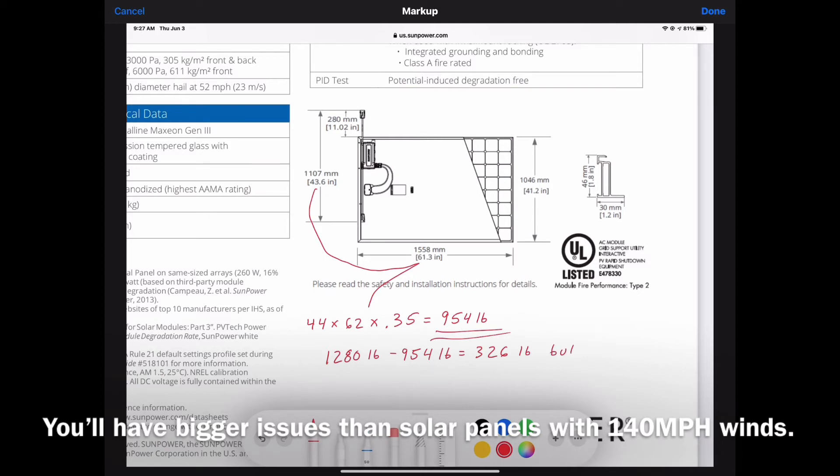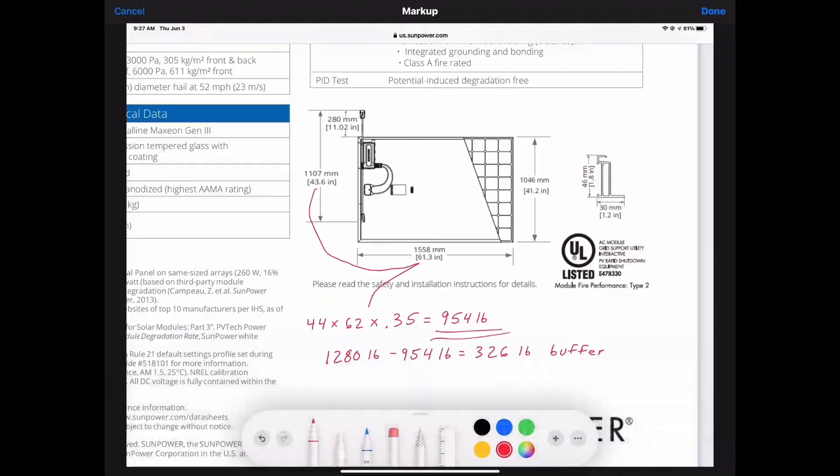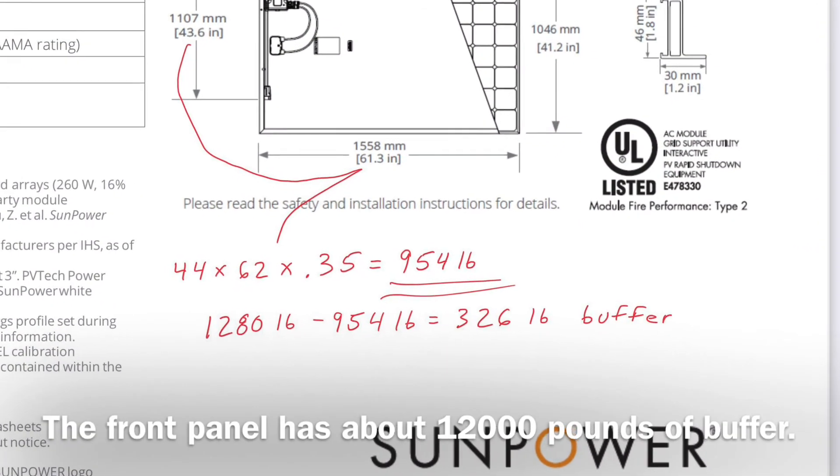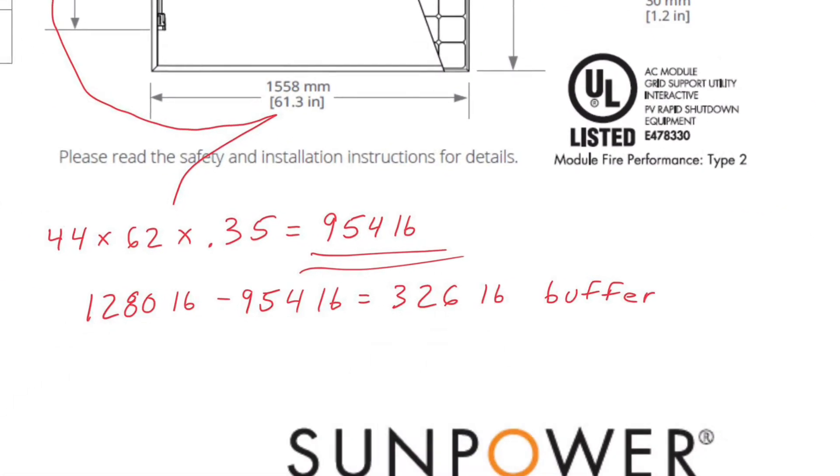So, I have 326 pounds of buffer on the inner panels, on the inside panel. And, of course, the one in the front has much more buffer.